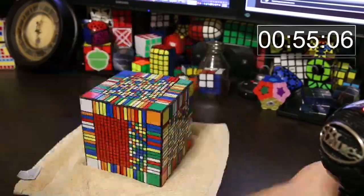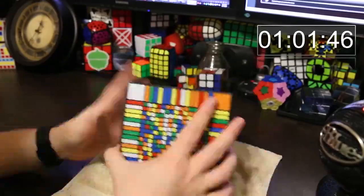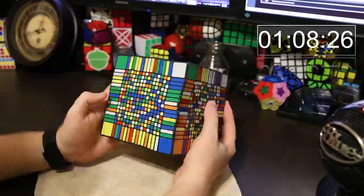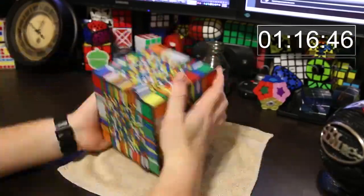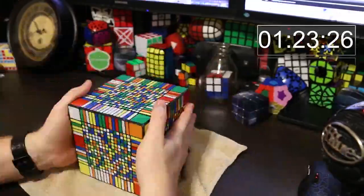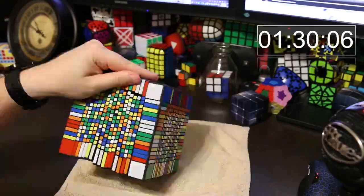But anyway, the way you solve a 17x17 is just like you would a 7x7 or a 5x5. If you can solve one of those, then the 17x17 isn't that hard, but it is very, very tedious. And so the way I'm solving it is using the reduction method, and basically you reduce the cube into a 3x3, and then you solve the 3x3.